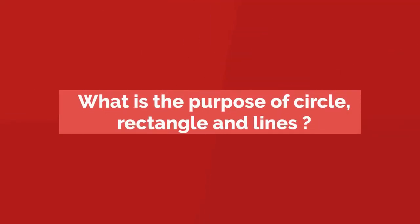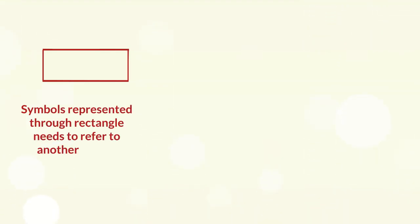What is the purpose of a circle, rectangle, and line arrow in a syntax diagram? Symbols represented through rectangle need to refer to another syntax diagram to get the full definition. For example, digit or letter - it needs further clarification.